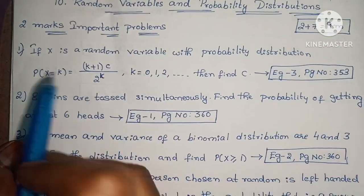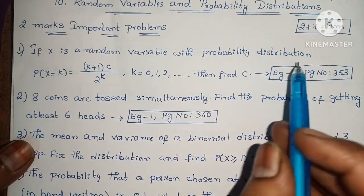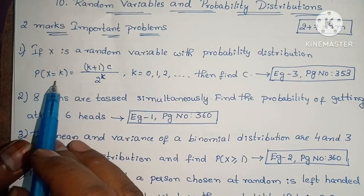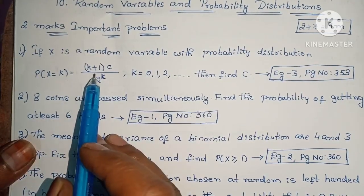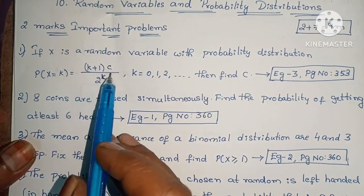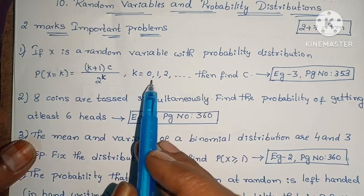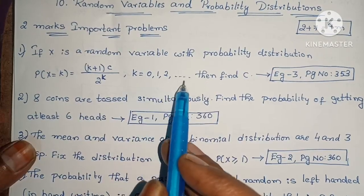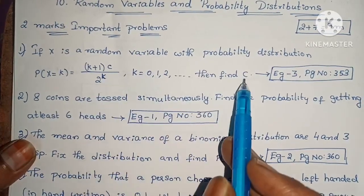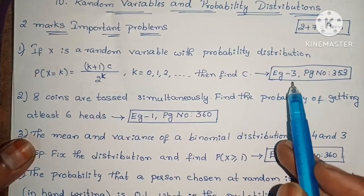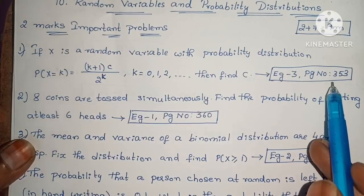If x is a random variable with probability distribution P of x equals to k, that equals to (k+1) · c / 2^k, where k equals to 0, 1, 2 and so on, then find the value of c. Example 3, page number 353.